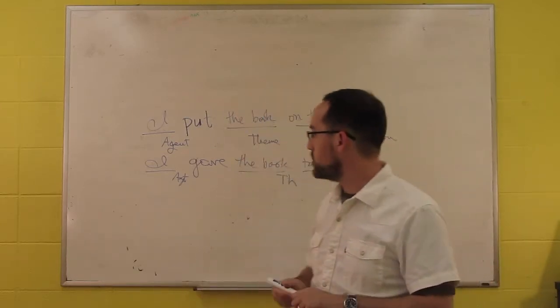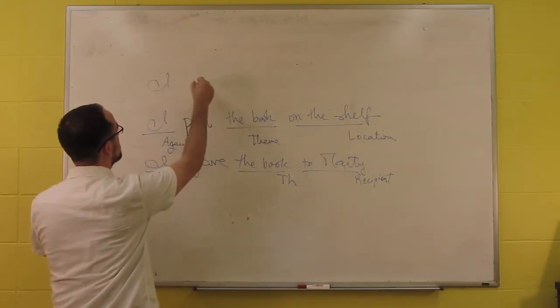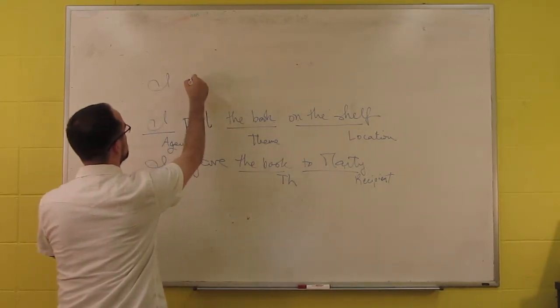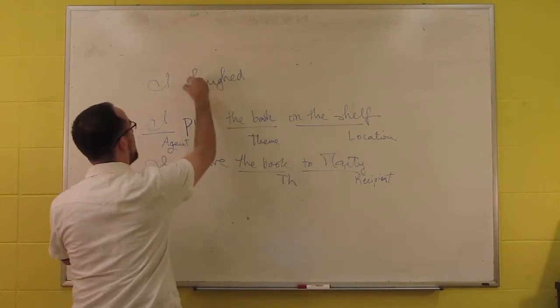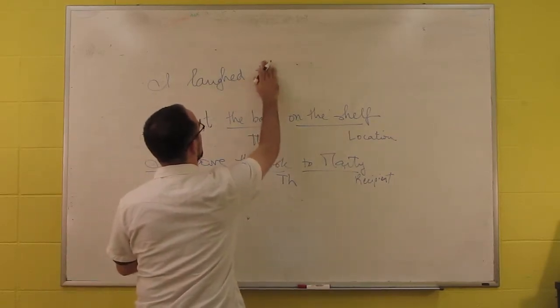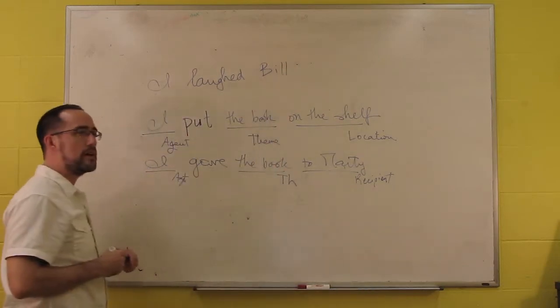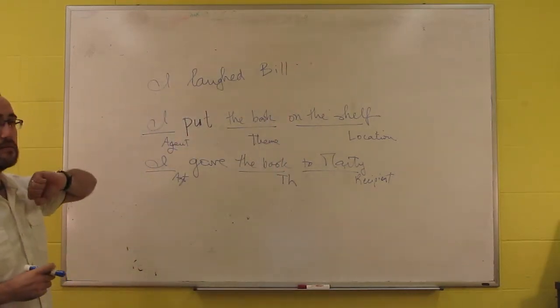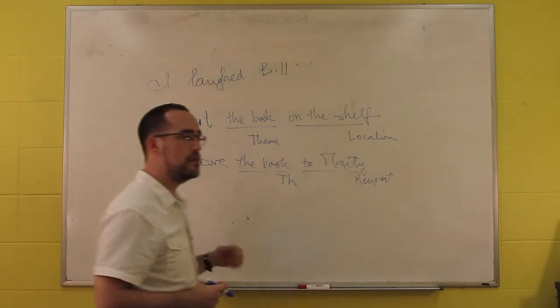It also helps us understand why we can say I laughed, but why a verb like laughed can't have an object. Why can't we just add an object, I laughed Bill? Or why can't we add a second subject, I laughed Bill, to mean I laughed and Bill laughed?